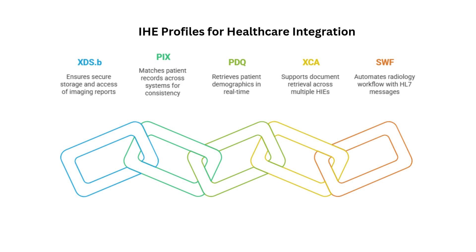Another crucial profile was PIX, which tackles the problem of patient identification. PIX helps to link a patient's record in one system to their record in another system, even if they have different IDs - like a detective that figures out who's who. Then there's PDQ, which allows the electronic health record to query the imaging center for basic patient demographics - like name and date of birth - in real time, to prevent mismatches from happening in the first place.